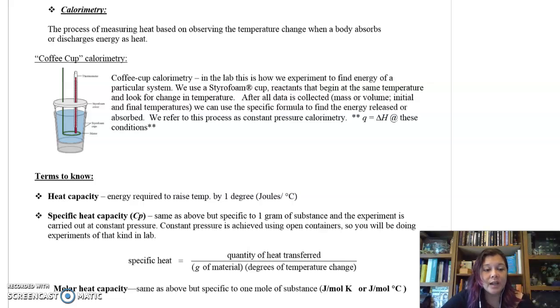So first, let's review calorimetry. In Honors Chemistry, we did an experiment where we mixed a hot metal with some room temperature or cold water, and we observed the temperature changes to determine the specific heat capacity of the metal. We're talking about the same process here.